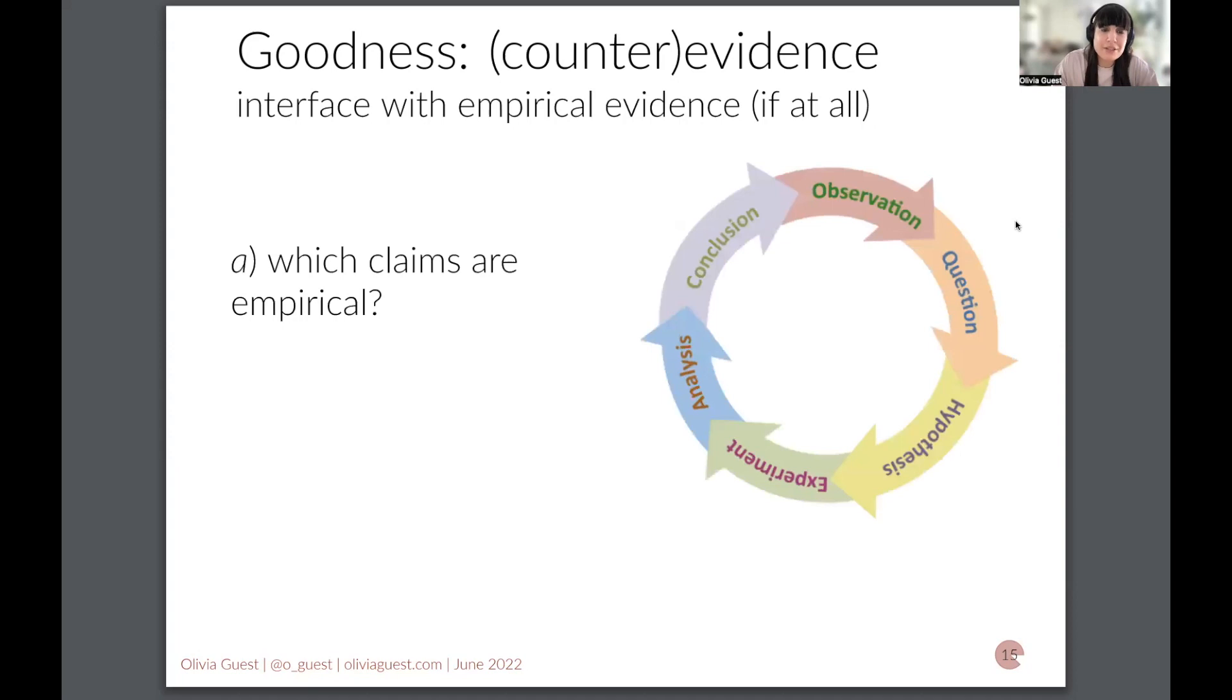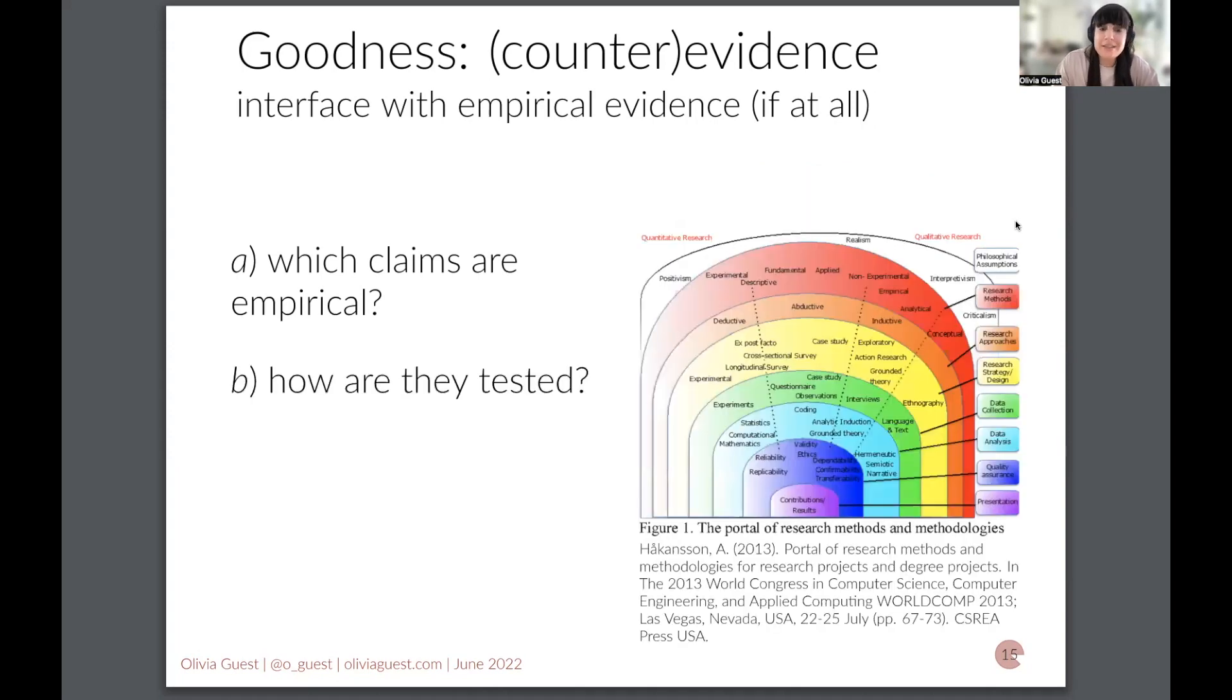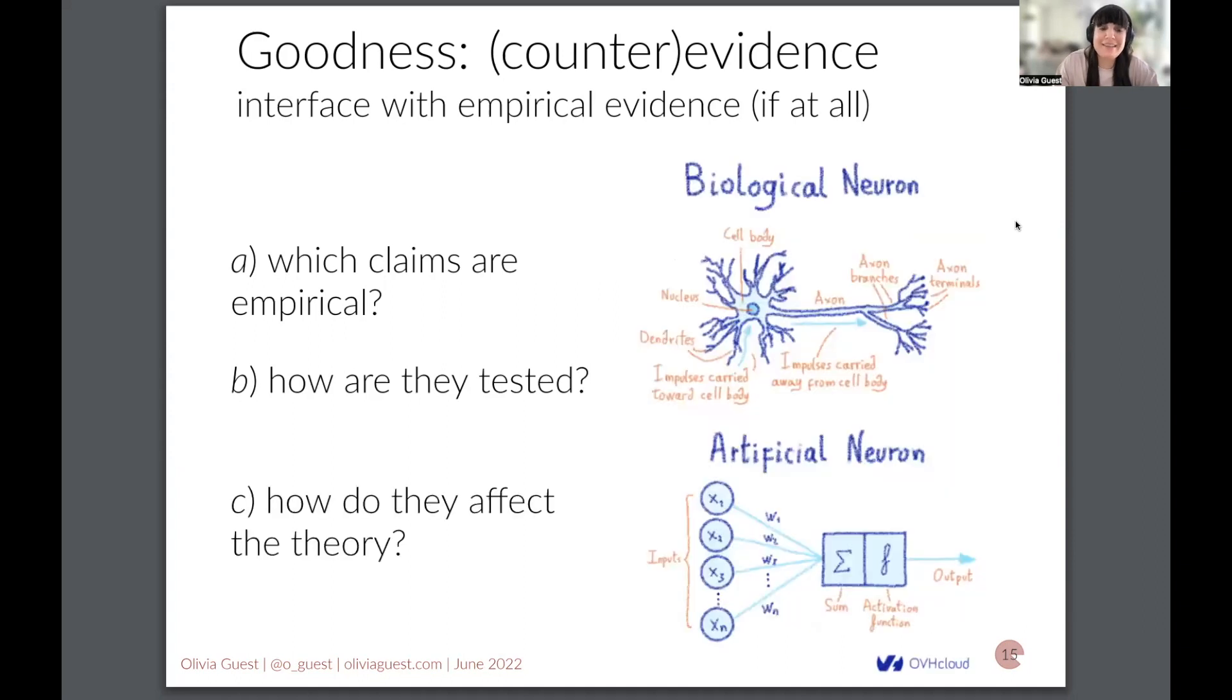So a theory should be able to say which claims it makes are empirical. So they can enter potentially the some traditional scientific method, because the traditional scientific method is shown as a caricature here is not applicable in all cases. So we need to know where you can enter this empirical data collection, for example. And how are these claims tested? There's many options. There's many different ways of testing claims. And that should be transparent and clear.